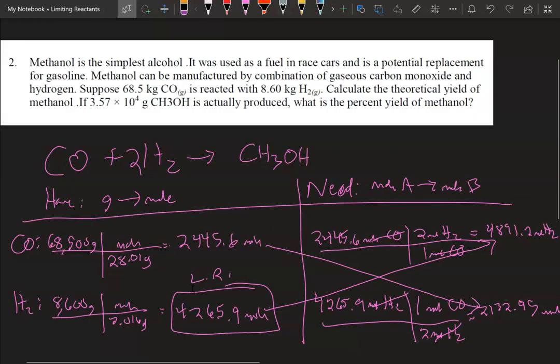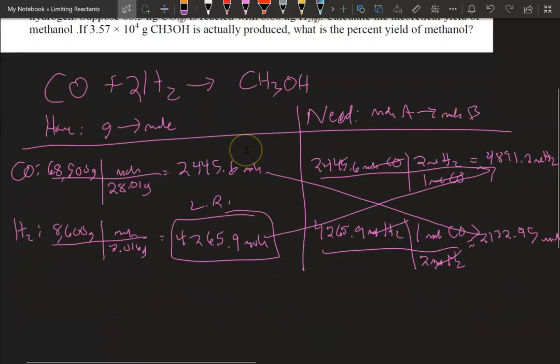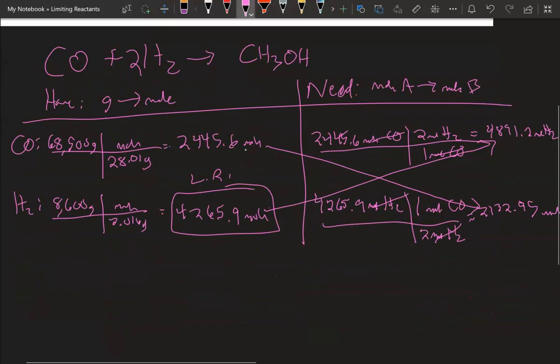Now again you're going to take the limiting reagent and we're going to calculate the theoretical yield for methanol. So you take the moles of the hydrogen, we're going to convert this into moles of CH3OH, and then you're going to take that and convert that into grams of CH3OH. Now we're going to use the mole ratio here and then we're going to multiply by the molar mass of methanol.